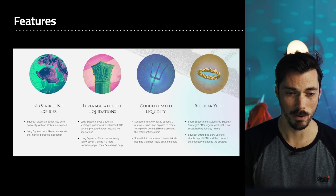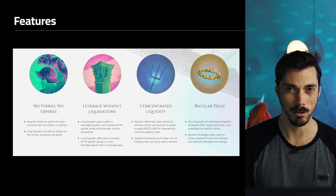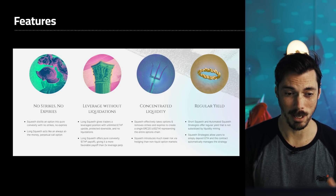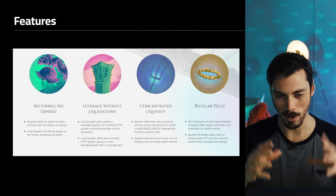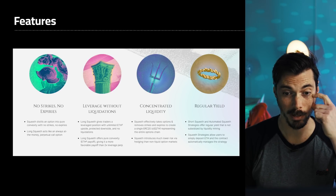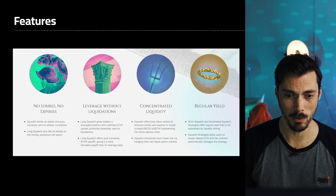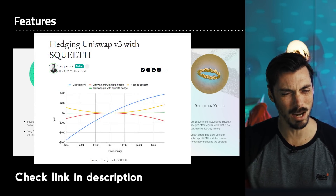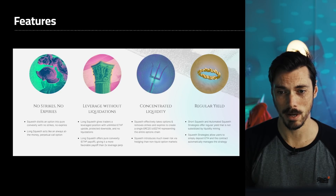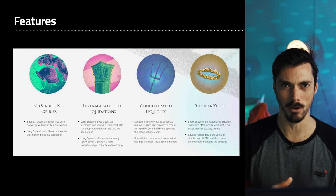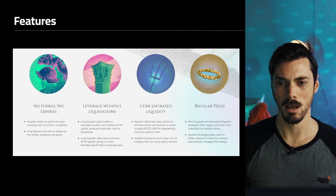Here are some features: no strikes, no expiries like you'd get on normal options. Long Squeeth acts like an always at-the-money perpetual call option. There are no liquidations on that long side either, giving you pure access to the convexity — that curve of the ETH squared payoff — which makes it more favorable than the 2x. There's more, like concentrated liquidity and hedging strategies to mitigate impermanent loss. And there's regular yield as well via short Squeeth and automated Squeeth strategies. Long and short are not simply two sides of the same coin — they are actually very different products.